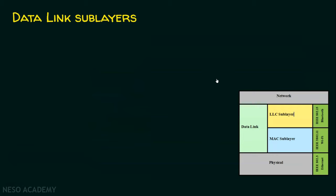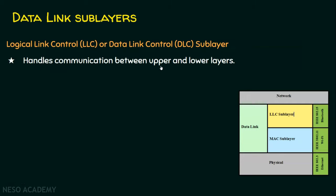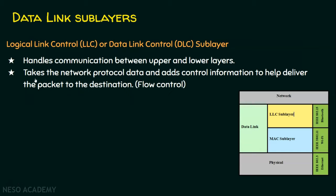The logical link control (LLC), also called data link control (DLC) sub-layer, is the first sub-layer. The LLC handles communication between the upper and lower layers. Its specific role is to take the network protocol data and add control information to help deliver the packet to the destination. This layer deals with flow control, adding the necessary control information received from the network layer.